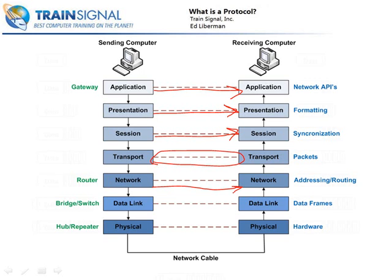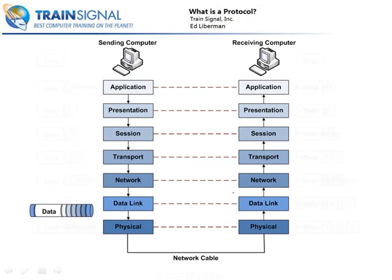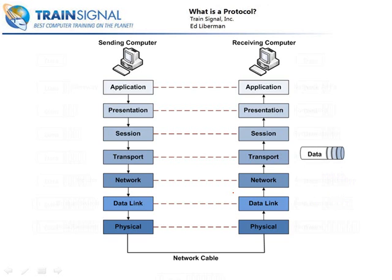The whole communication process works like this: on the sending computer, data is passed down through the OSI model, where each layer adds its own piece of information to assist in the communication process. Once it gets to the bottom, it is sent across the network cable to the other computer. Then at the bottom of the OSI model on that computer, each layer acknowledges and strips off the individual piece of information that the corresponding layer added on the sending side, until we end up with just raw data for the receiving computer.